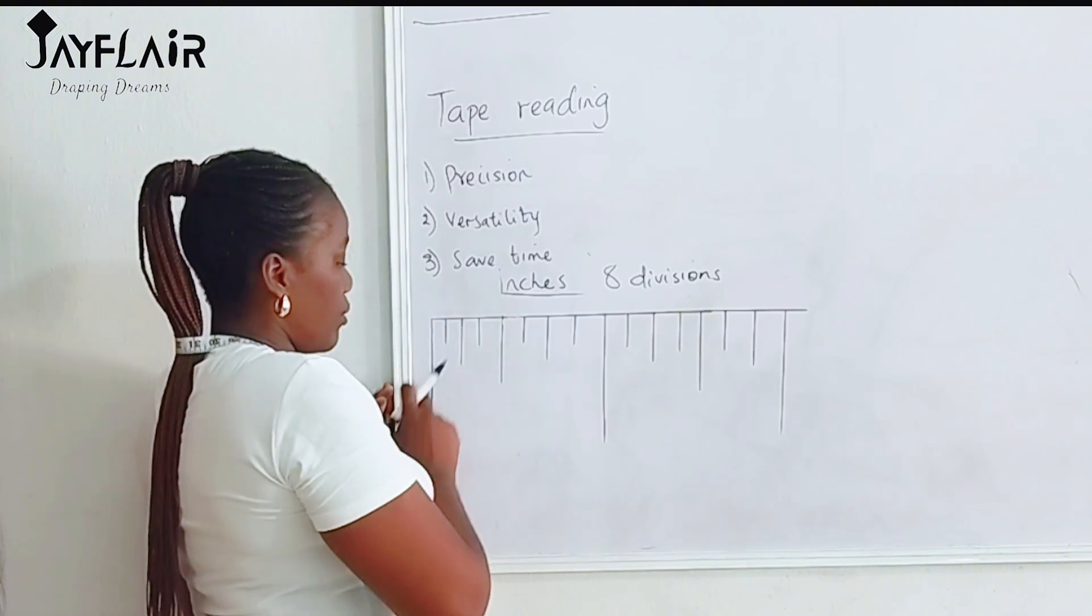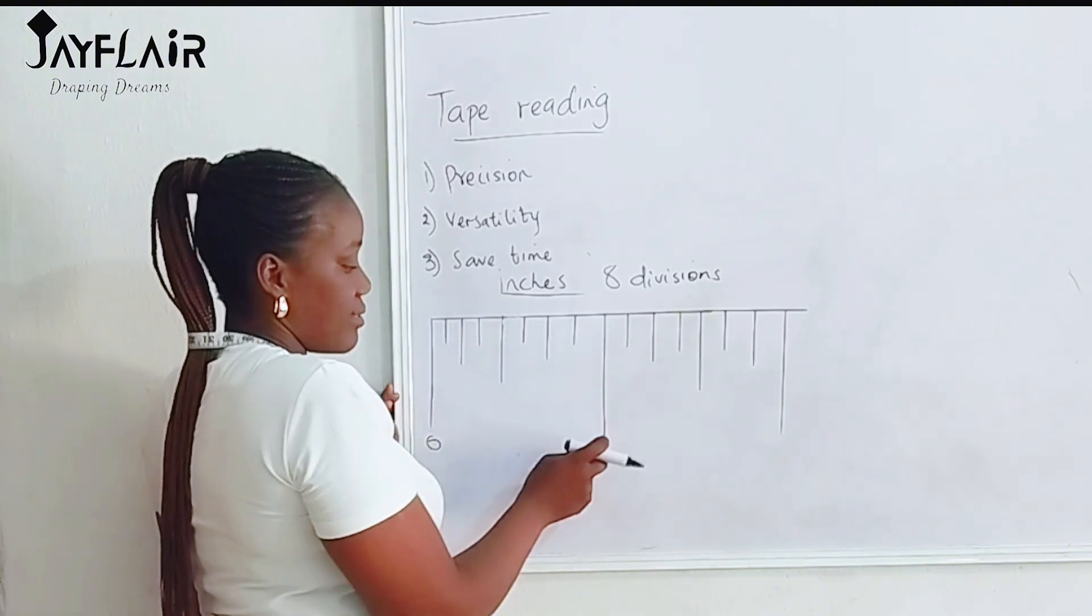So let's count: zero, one, two, three, four, five, six, seven, and this is eight.